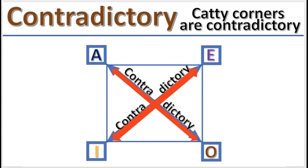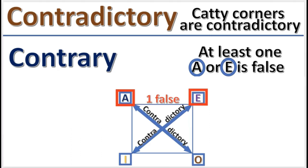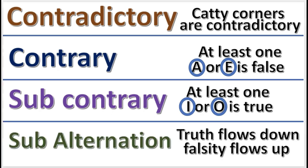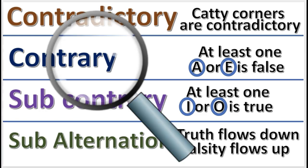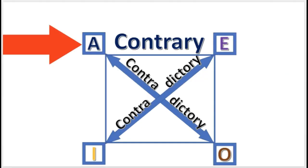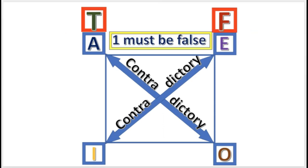Contradictory means catty corners are contradictory. Contrary means at least one A or E is false. Subcontrary means at least one I or O is true. And subalternation means truth flows down and falsity flows up. Let's look at each relation in more detail. Contrary: at least one A or E is false. For example, if the A proposition is true, then the E is false, because at least one must be false.